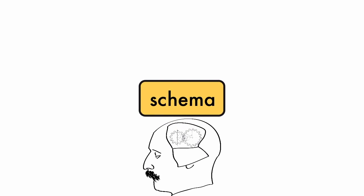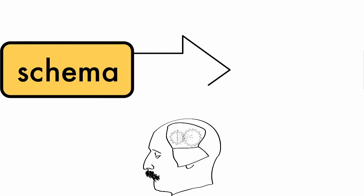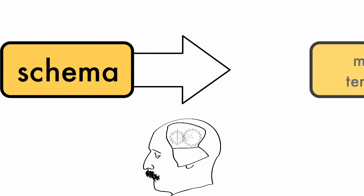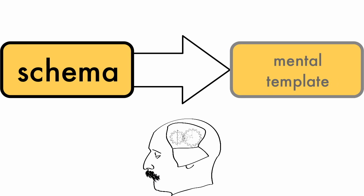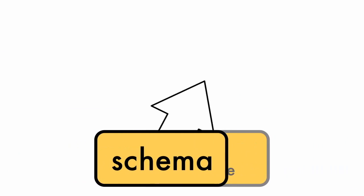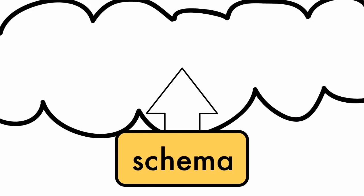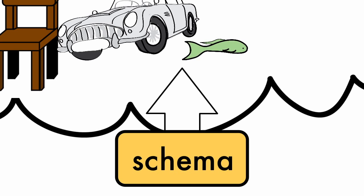Schema is an organized pattern of thought that establishes a mental framework representing some aspect of the world. We develop schemas for all types of items and activities, from simple items such as a chair, a car, fish, bird, or house,